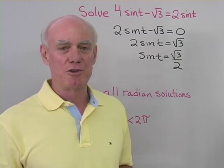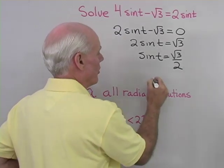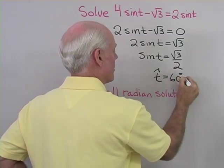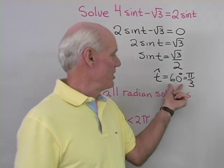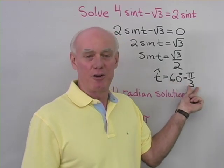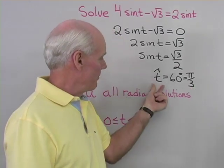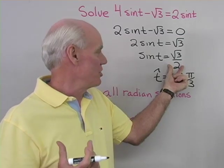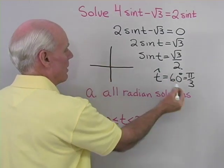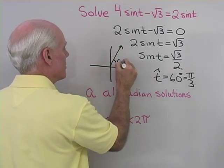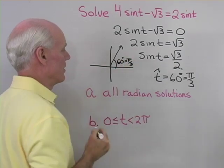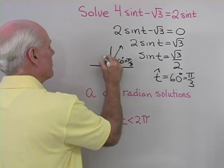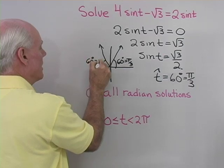Since sin t equals square root 3 over 2, the reference angle for t must be 60 degrees, or pi over 3 in radians. I generally think in degrees first, then convert — so pi over 3 is my reference angle. Since the sine function is positive, sine is positive in quadrants 1 and 2, so I'll draw my reference angle of 60 degrees, which equals pi over 3, in both quadrant 1 and quadrant 2.